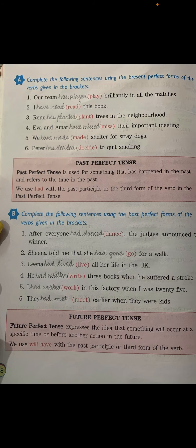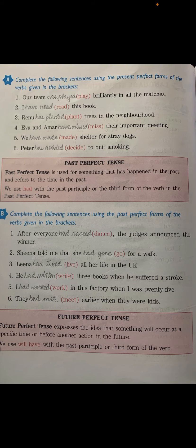Complete the following sentences using the past perfect forms of the verb given in the bracket. Number one: 'After everyone had danced, the judges announced the winner.' The third form of 'dance' is 'danced.'